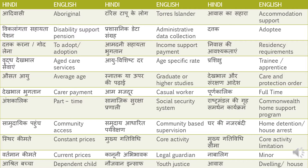So care and protection order is dekbhal ya sanrakshan adesh. Dekbhal bhuktan — Carer Payment. Aam mazdoor — Casual Worker. There are two types of workers: casual workers and fixed workers. Sani kamgar or sani mazdoor is also a casual worker.